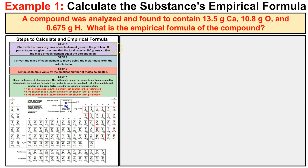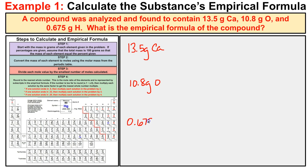Step one: start with the mass in grams of each element given in the problem. In this problem we have 13.5 grams of calcium, 10.8 grams of oxygen, and 0.675 grams of hydrogen. That's step one — we have the grams of each element in this compound.